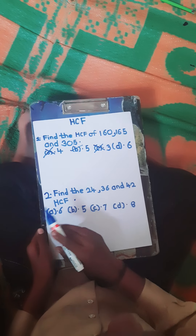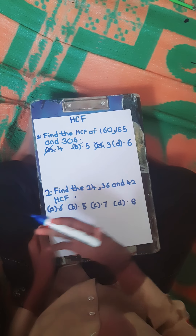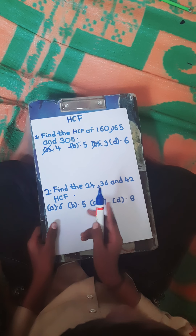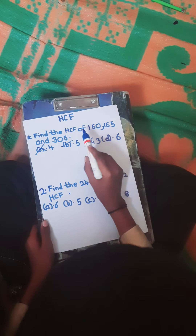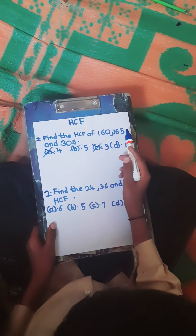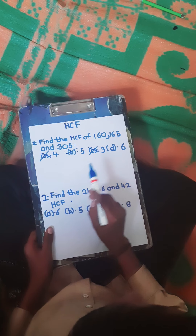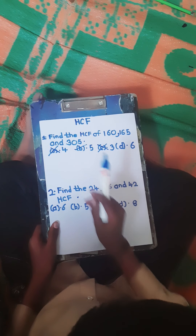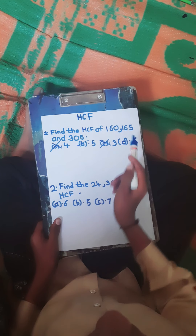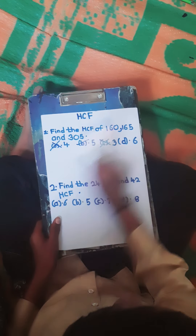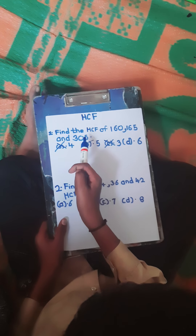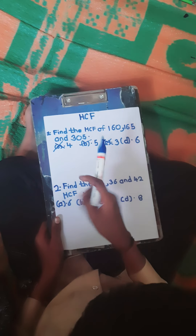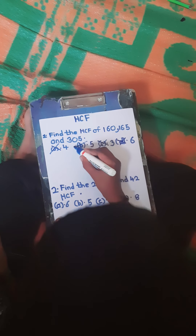Now for 6: a number divisible by 6 must be divisible by both 2 and 3. The number 160 is divisible by 2 but not by 3, so 6 does not work for 160. And 305 is not divisible by 2 or 3, so 6 is also wrong. The correct answer is 5.